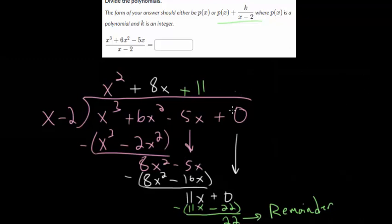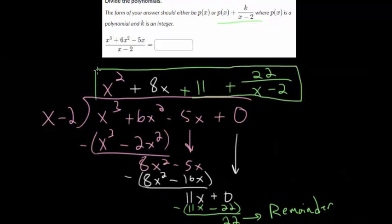So our remainder was 22. So we can put plus 22 divided by the original linear expression that we divided by this x minus 2. But you can see that that does match up with this description, we have some polynomial, that's that first part all the way to the 11. And after that, we have plus k over x minus 2, where in our case, k is 22.